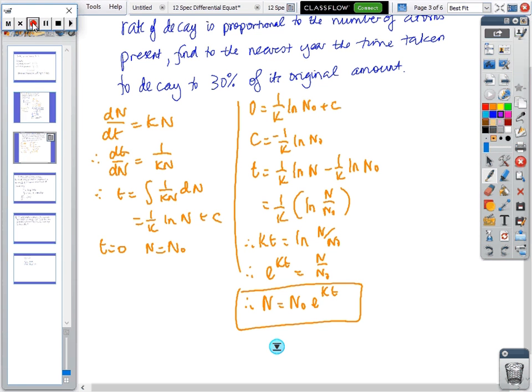We've got to find the value of k. We can do it from here. The number is going to be half the original, so whatever this number is is half of that number there. So 1/2 equals e^(k times 1200).